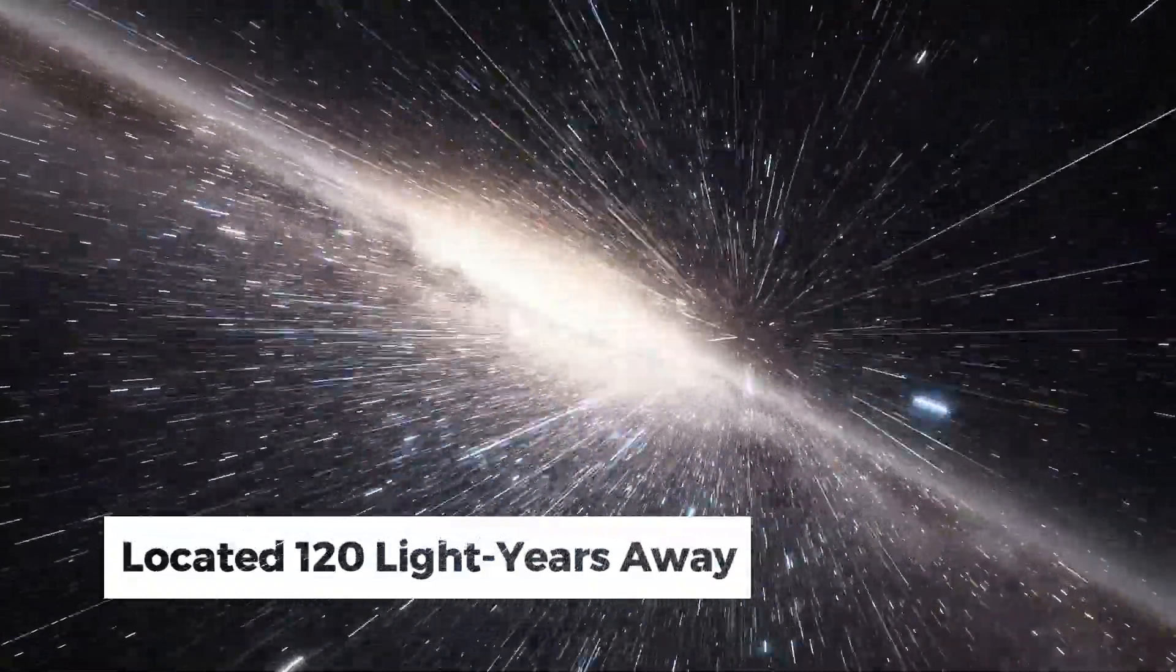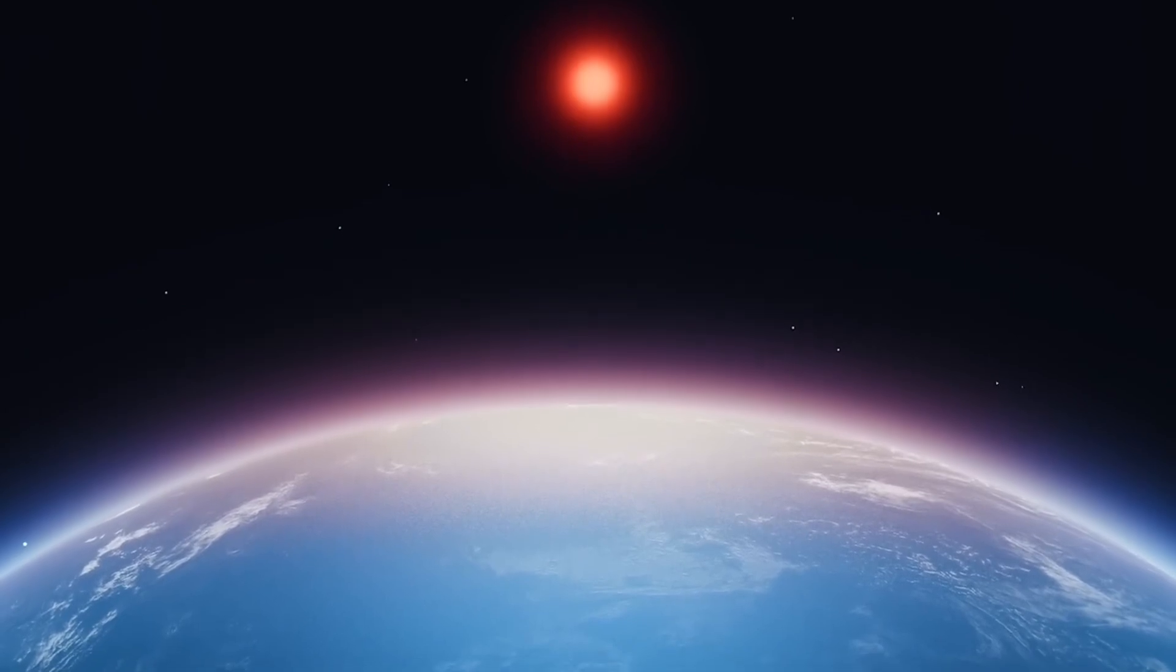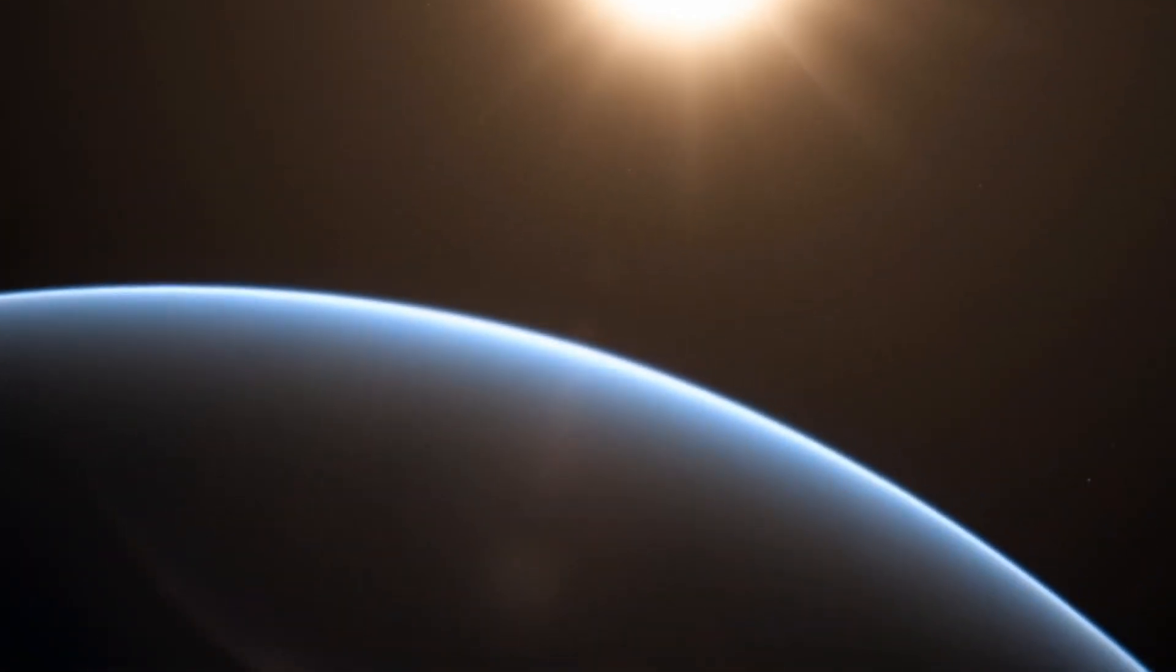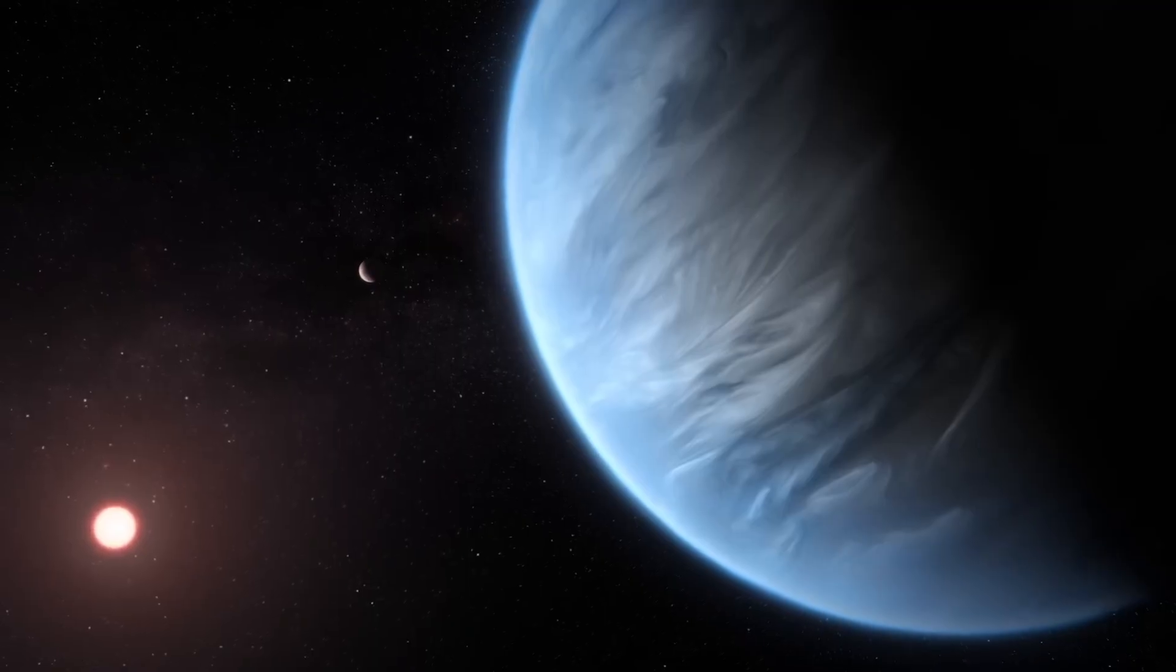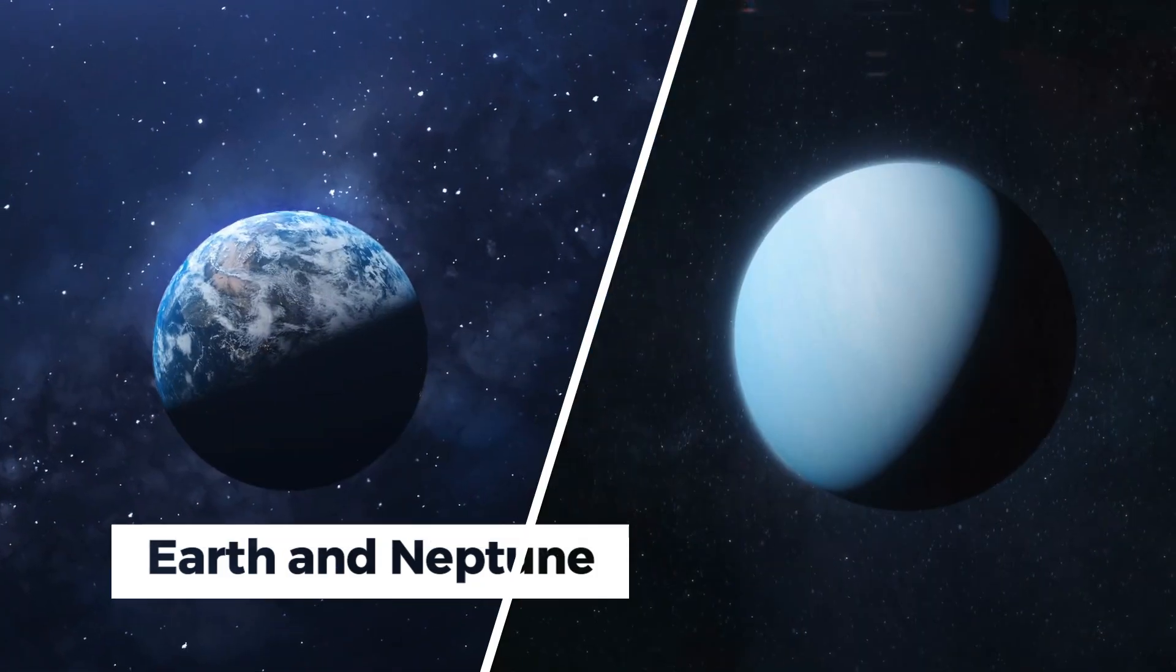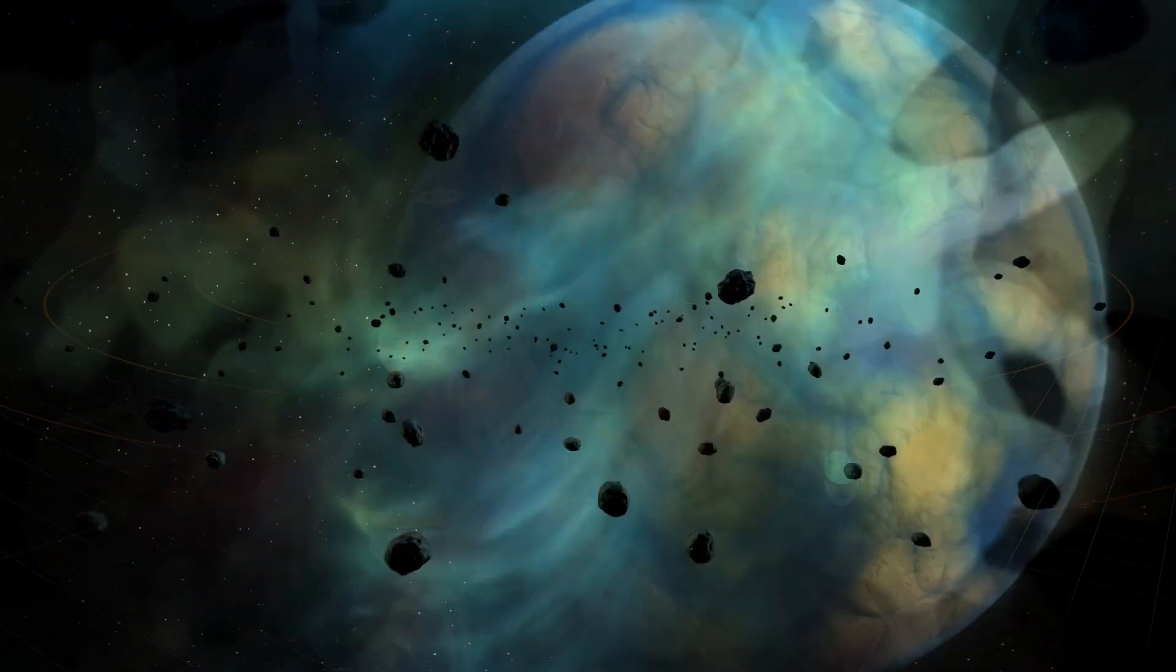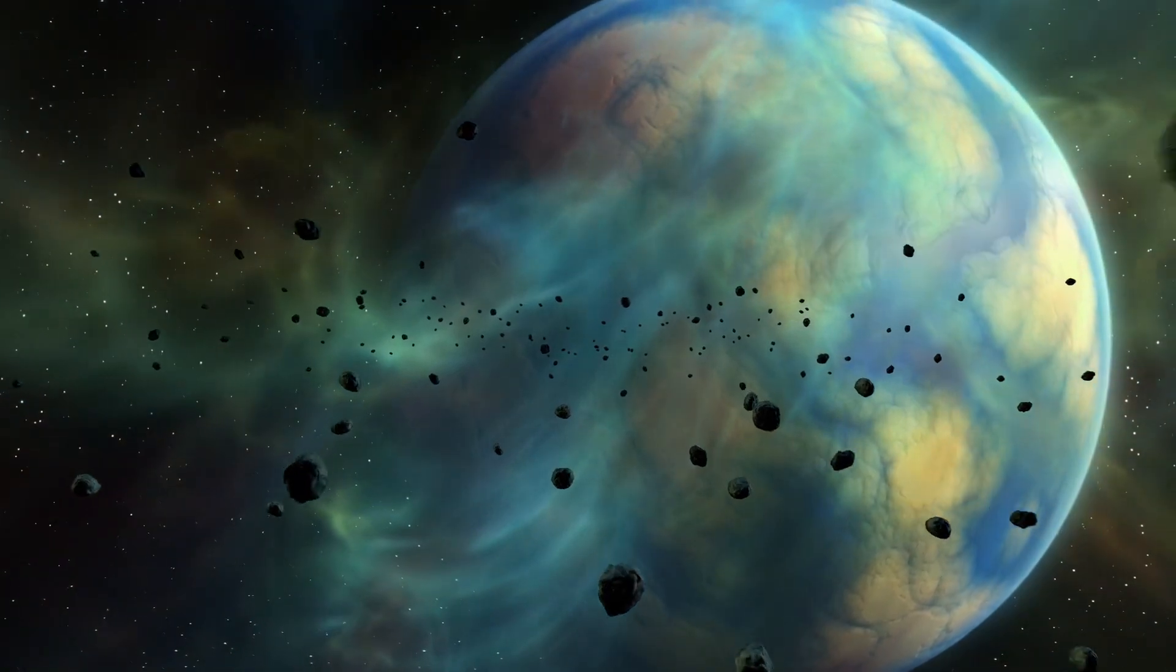Located 120 light-years away, K218b orbits the temperate dwarf star K218 within its habitable zone. Exoplanets of K218b's kind, with sizes falling between Earth and Neptune, are unique, having no counterparts in our solar system. These kinds of planets remain a mystery to us.